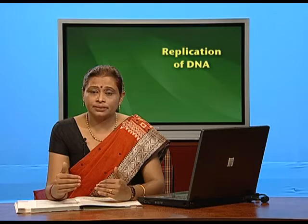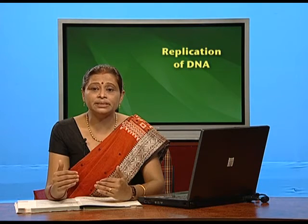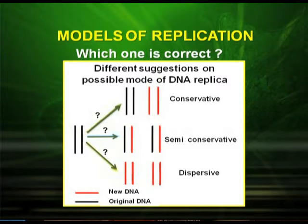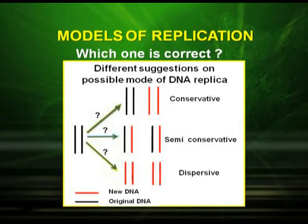Now let us see how DNA replicates — that is, how it produces a similar copy. There have been three models of replication suggested, and we have to decide which one is correct. The three models are: conservative, semi-conservative, and dispersive.